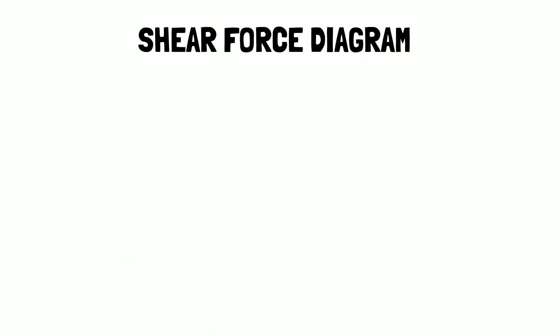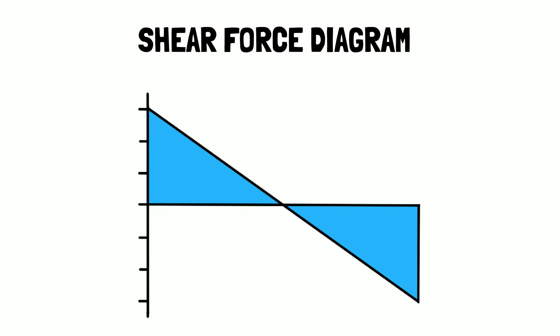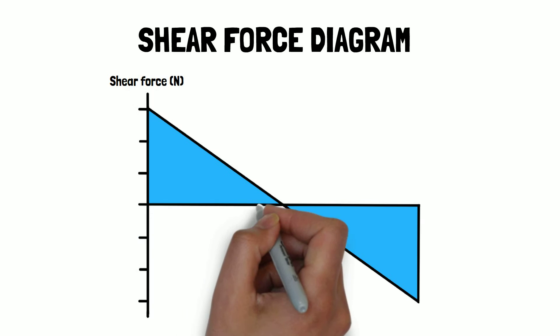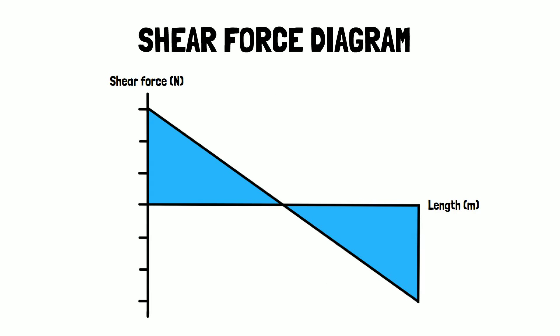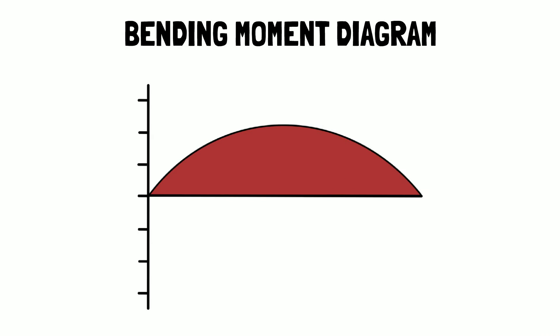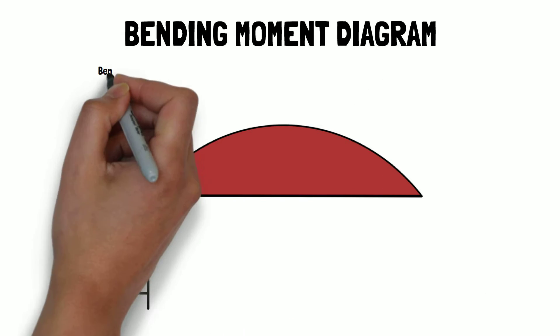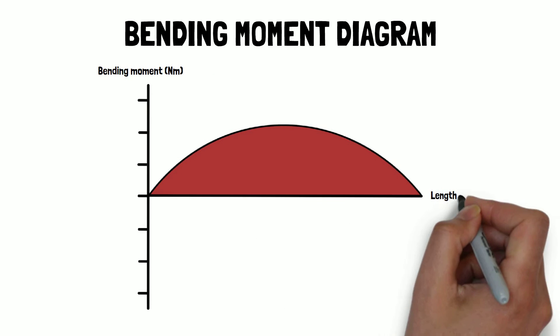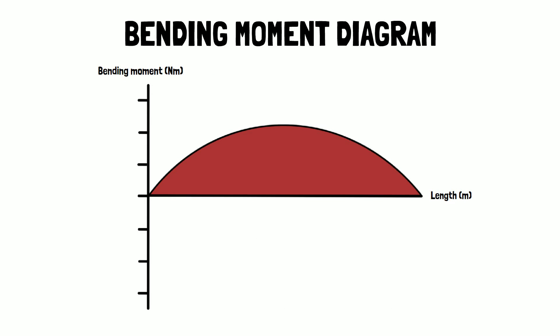The shear force diagram shows the variation of the shear force along the length of the beam. The vertical axis represents the magnitude of the shear force and the horizontal axis represents the length of the beam. The diagram is typically shown with positive values of shear force above the horizontal axis and negative values below the axis. The bending moment diagram similarly shows the variation of the bending moment along the length of the beam, with positive values above and negative values below the axis.